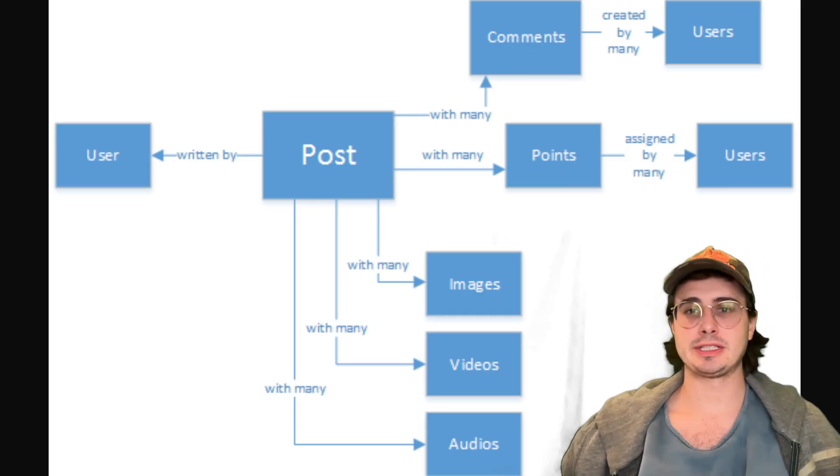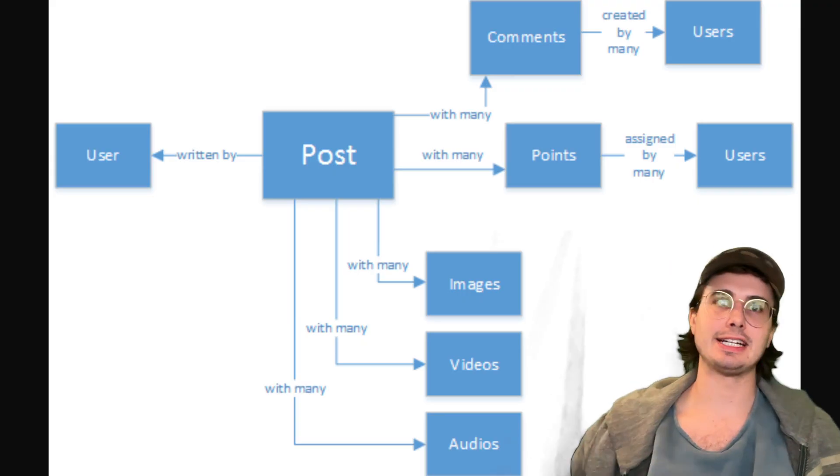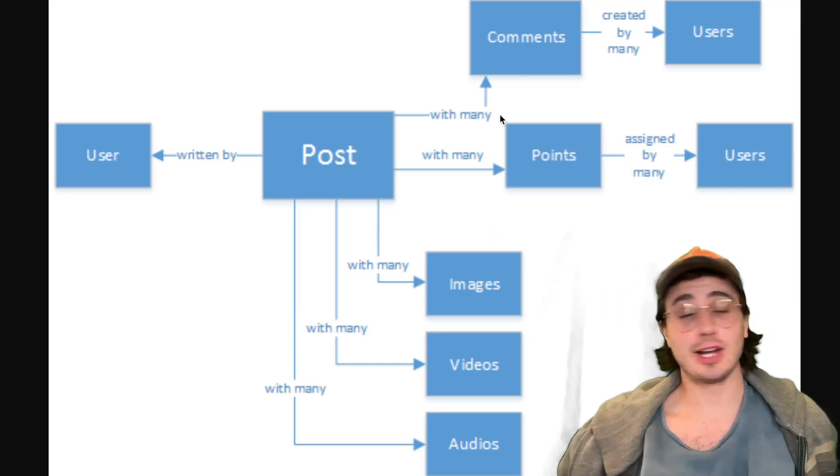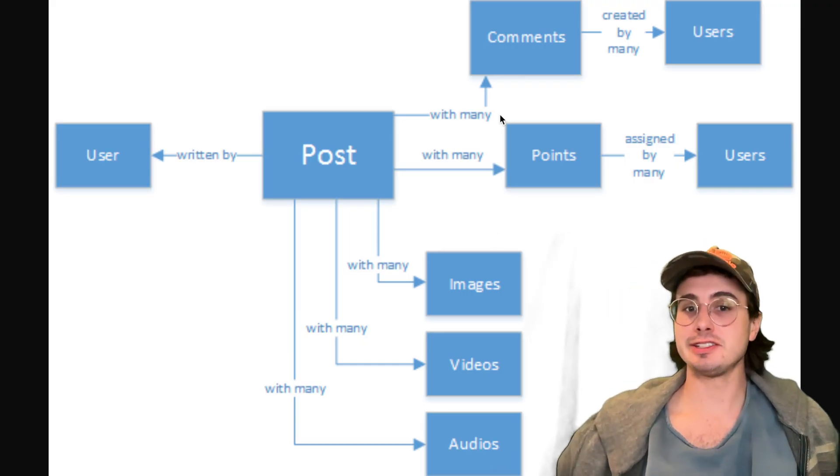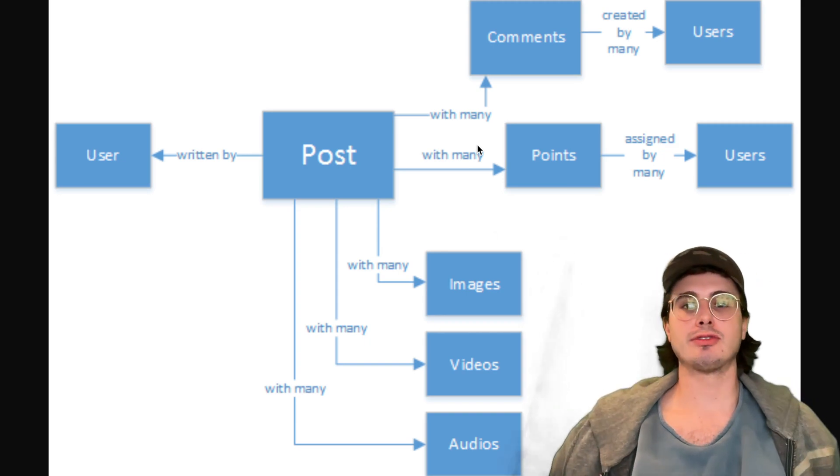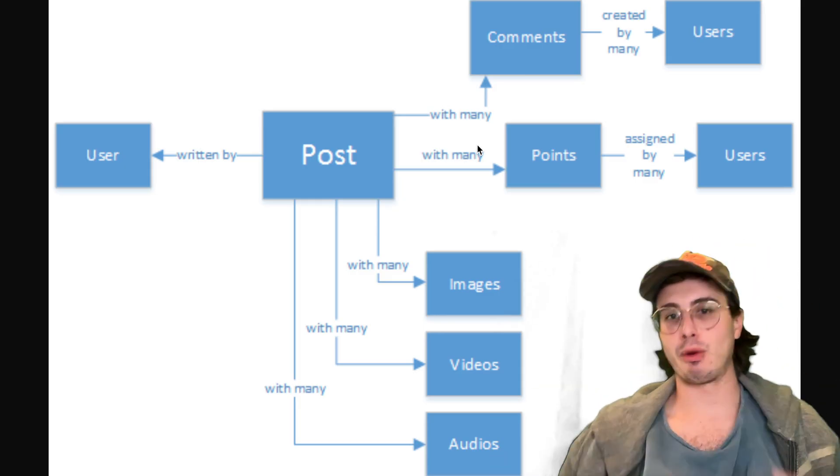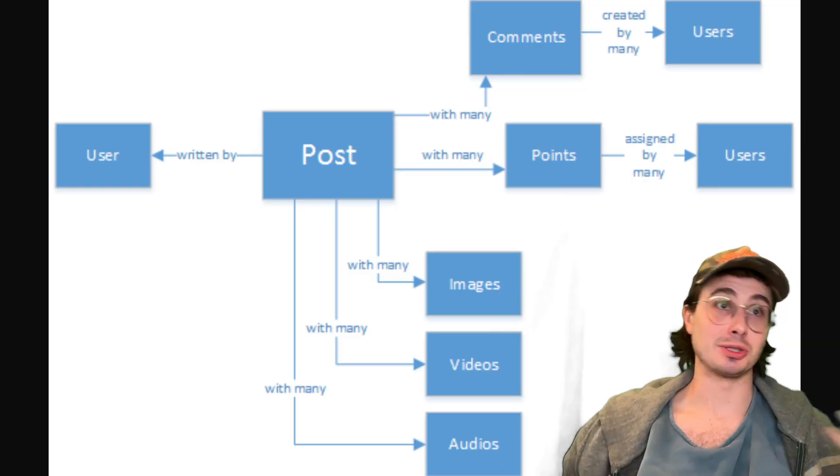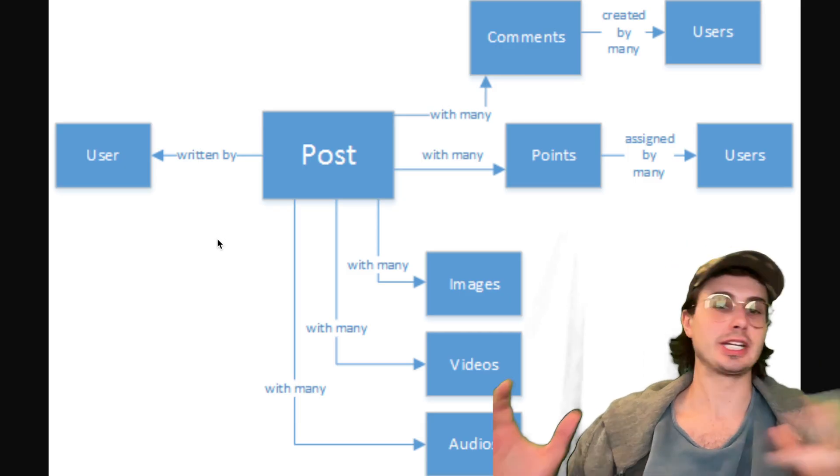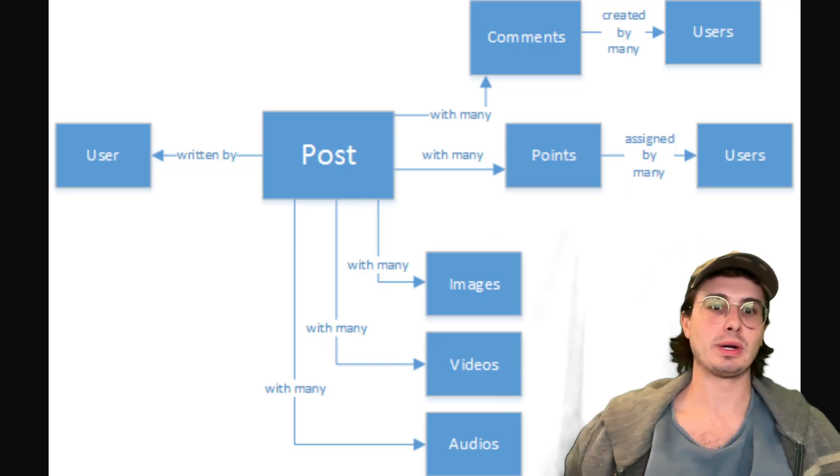Another common question is how would you design a data model for something like a social media platform? Think about key entities a business would want to track. For social media, that's things like users, posts, relationships between users, friendships, comments, and likes.